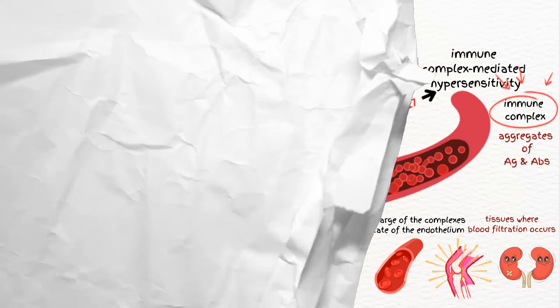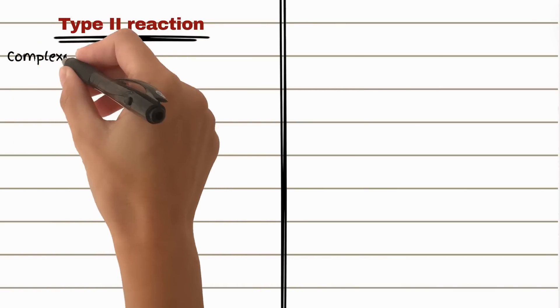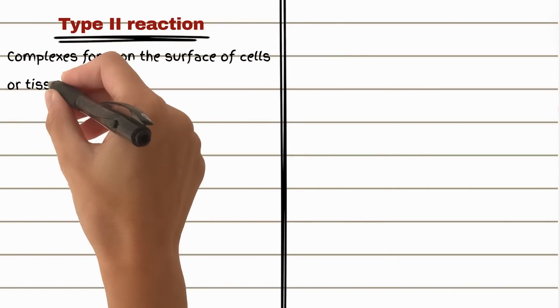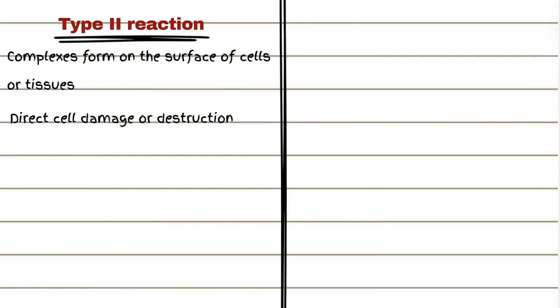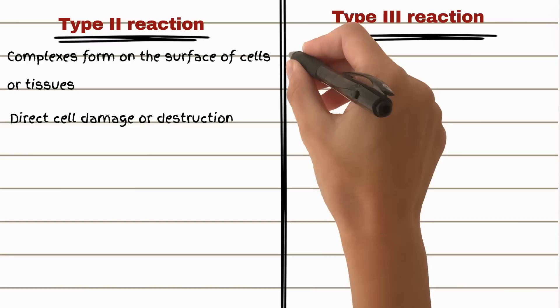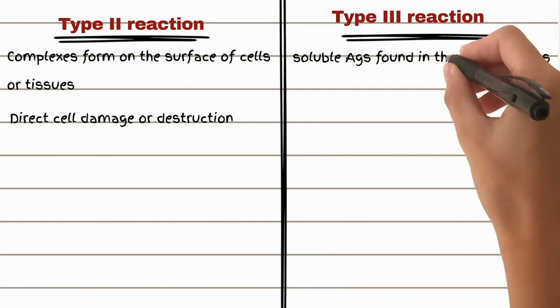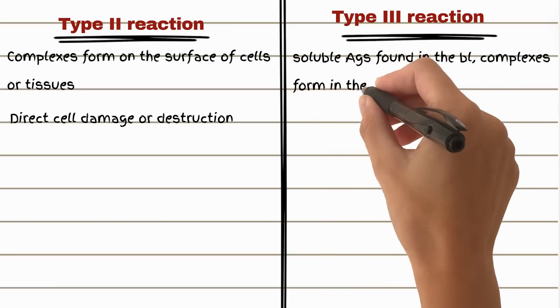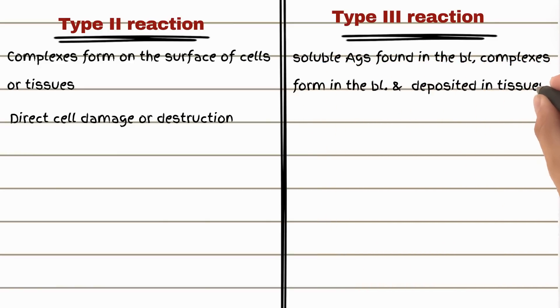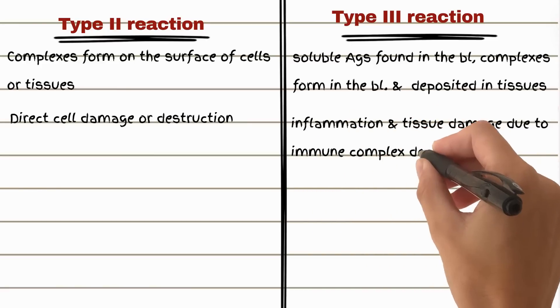But there is a main difference. In type 2 reactions, complexes form on the surface of cells or tissues, leading to direct cell damage. In type 3 reactions, soluble antigens found in the bloodstream form complexes in the bloodstream and are deposited in tissues, causing inflammation and tissue damage due to immune complex deposition.